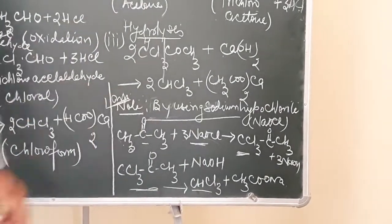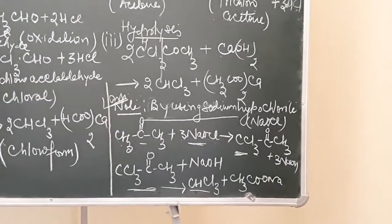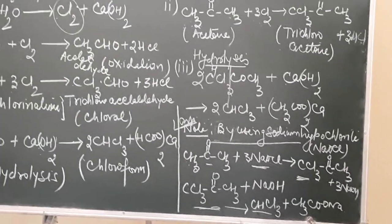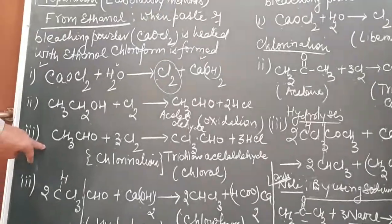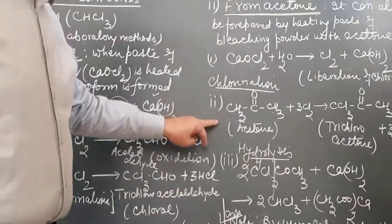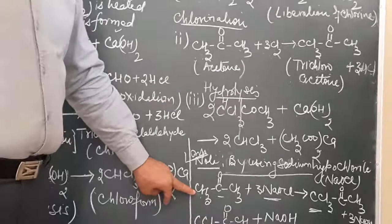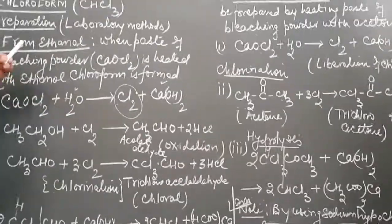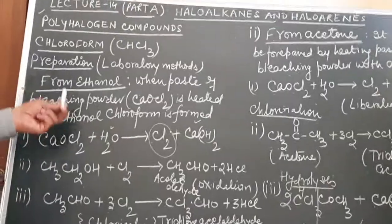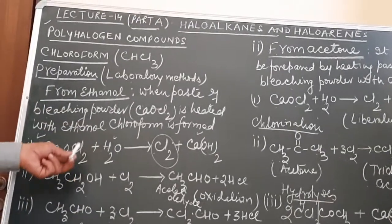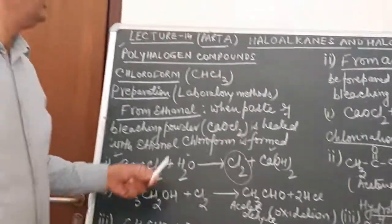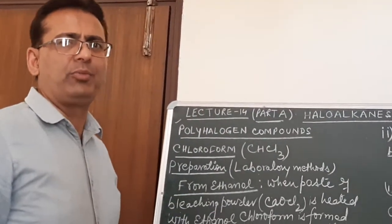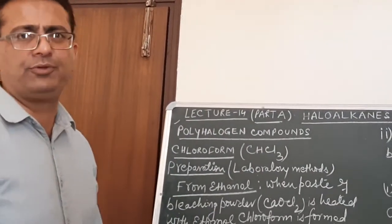This is one of the most common questions asked in the board examination. When we discuss the chapter of alcohol and acetone, these methods will also appear as properties of those compounds. In this lecture 14, Part A, we have covered the methods of preparation of the trihalogen derivative chloroform. In Part B of this lecture, we will discuss the physical and chemical properties of chloroform. Thank you.